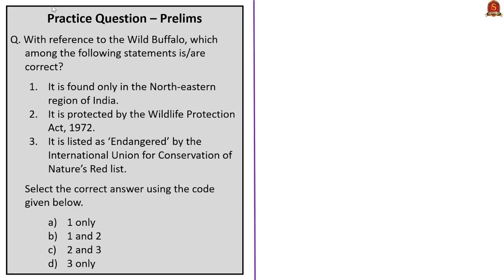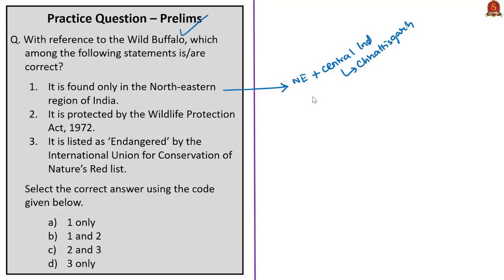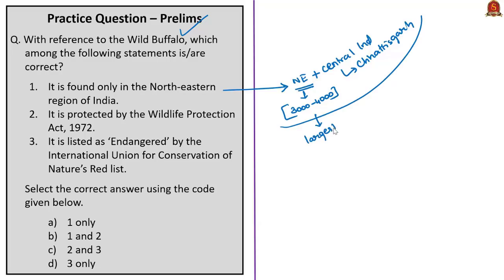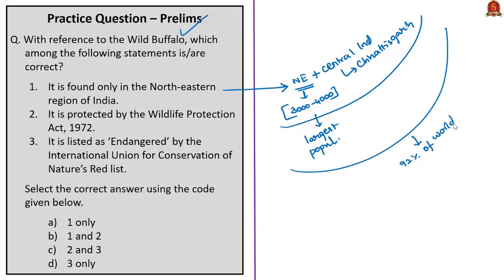This question is with reference to the wild buffalo. The first statement: it is found only in the northeastern region of India. This is incorrect — wild buffaloes are found in the northeastern region AND in central India, particularly in Chhattisgarh. According to the Wildlife Trust of India, the estimated population in the northeastern region is around 3,000 to 4,000 individuals, and India constitutes 92 percent of the world population of wild buffalo.